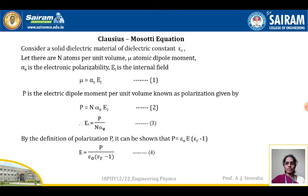Therefore, rearranging the terms, E_i is equal to P divided by (n times alpha_e) — that is equation 3. By the definition of polarization P, it can be shown that P equals epsilon_0 times E times (epsilon_r minus 1), and rearranging, E equals P divided by (epsilon_0 times (epsilon_r minus 1)) — let that be equation 4.